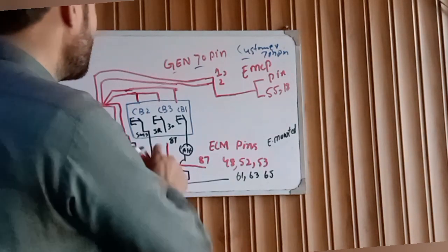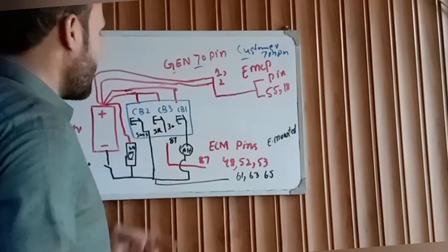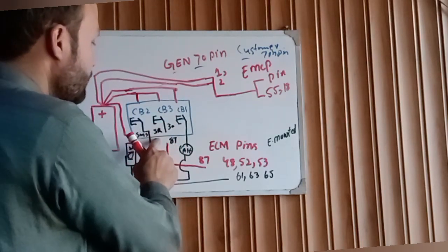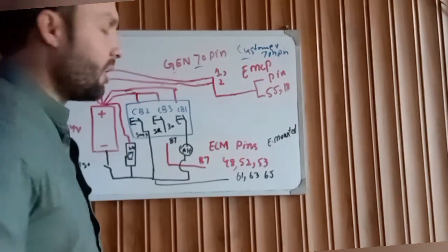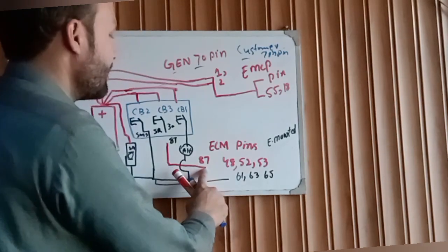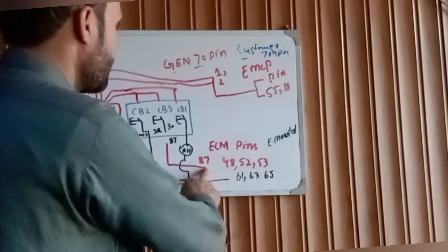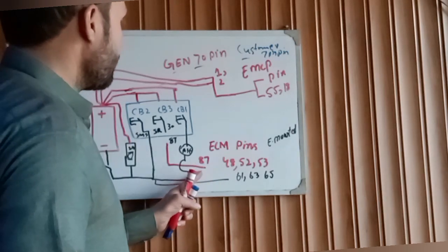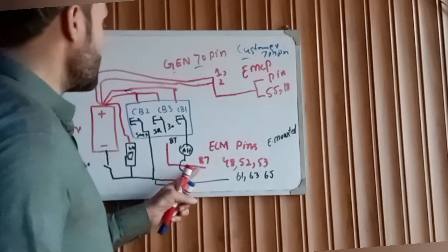Second, breaker number three, this is the SR slave relay. This is out for the main ECM relay to turning on, main ECM relay pin 87.